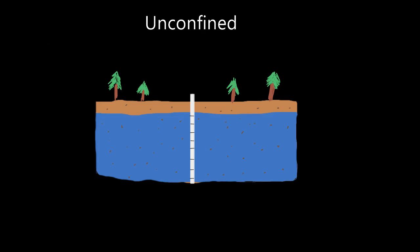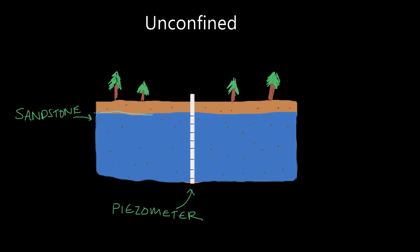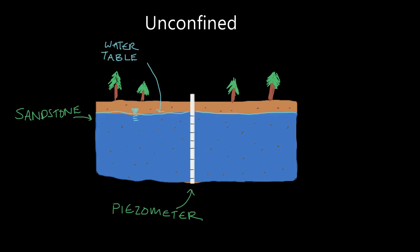Let's start out with our unconfined example. Here's our rock unit that is acting as our aquifer — let's call it a sandstone. And here's our well, which I'm going to call a piezometer. A piezometer is basically a well whose sole purpose is to measure the water table or the potentiometric surface in an aquifer — it's not usually used for pumping water. So in an unconfined aquifer, the potentiometric surface and the water table are the same thing. The elevation of water in the aquifer will be the same as the water elevation in the well.